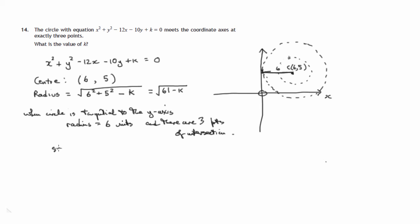So the radius, root 61 minus k is equal to six. So let's square both sides. So the square root disappears there. Six, six is 36. So let's add k to both sides and take away 36 from both sides. We'll end up with k being 25. So that's our first value.